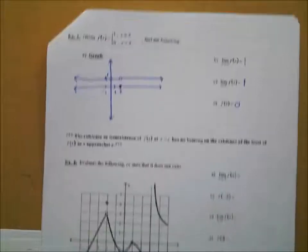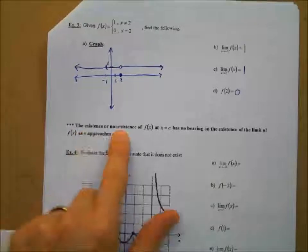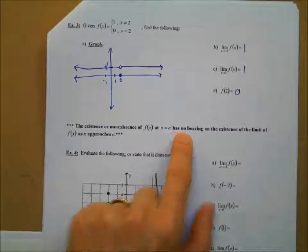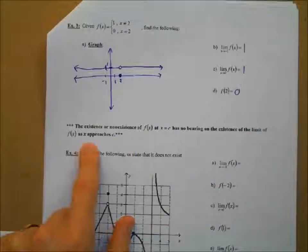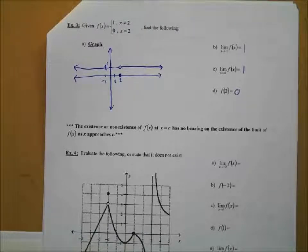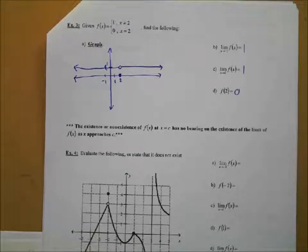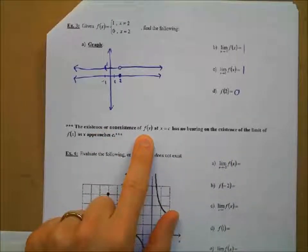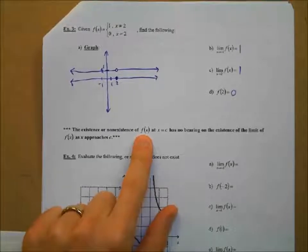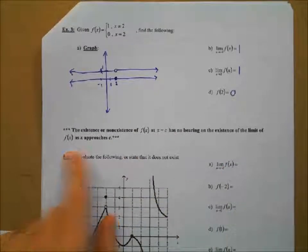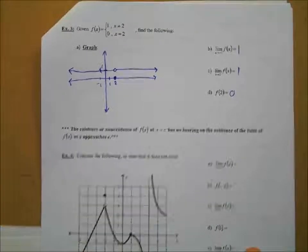Key thing to remember: the existence or non-existence of a function at x = C has no bearing on the existence of the limit of f(x) as x approaches C. Just because a function exists at C doesn't mean the limit necessarily exists there, and vice versa. The limit and the value of the function are not the same thing. If f is not specified to be continuous, they don't always guarantee each other's existence.